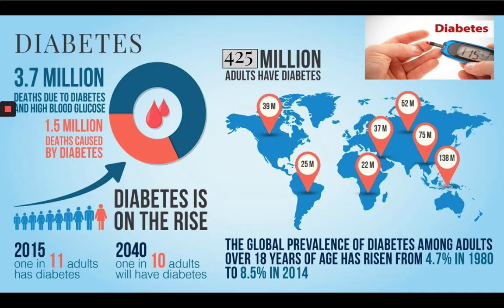Let's look at some statistics. There are 425 million adults across the globe that have diabetes, and this number is on the rise. It's estimated that in 2040, 1 in 10 adults will have diabetes. These numbers are scary — that's a large number of people that have this preventable disease.